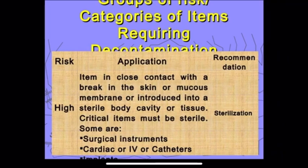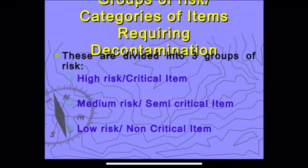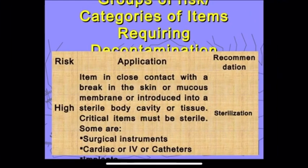High risk items are instruments in close contact with a break in the skin or mucous membrane — inserted into body cavities or tissues. Examples include surgical instruments, cardiac and IV catheters, and angioplasty instruments. The decontamination method for high risk items is sterilization.